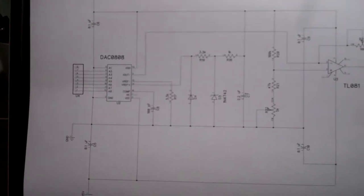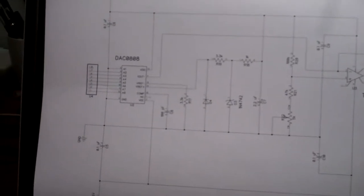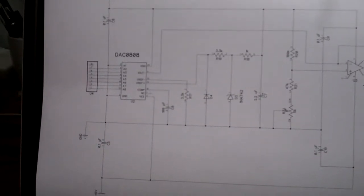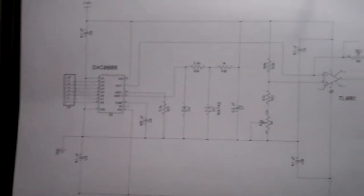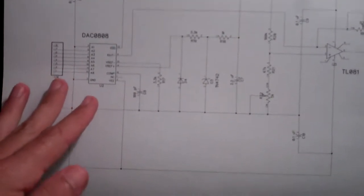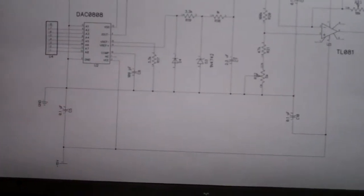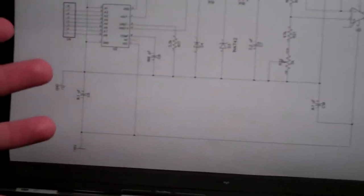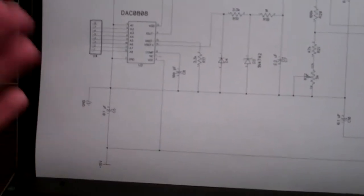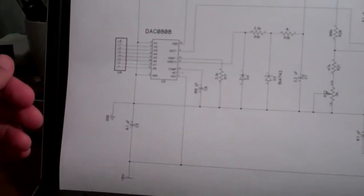I'll walk you through some of the weird things it does. As a quick overview, this is a current device, meaning it uses currents to achieve its end results, which is to obviously convert your digital information into a voltage.